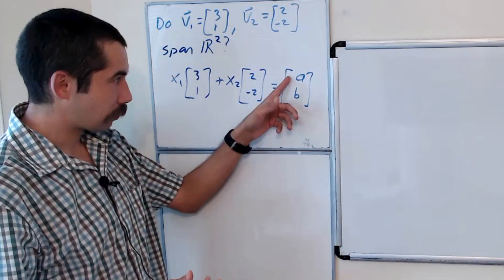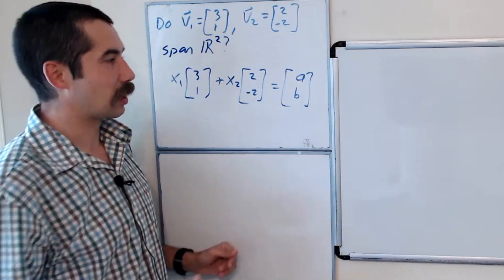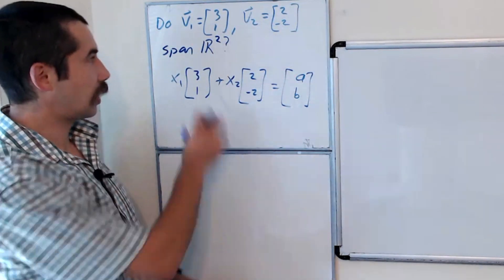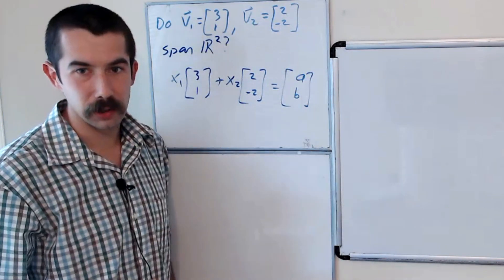And if it doesn't matter what values we plug in for a and b, then we span all of R2.